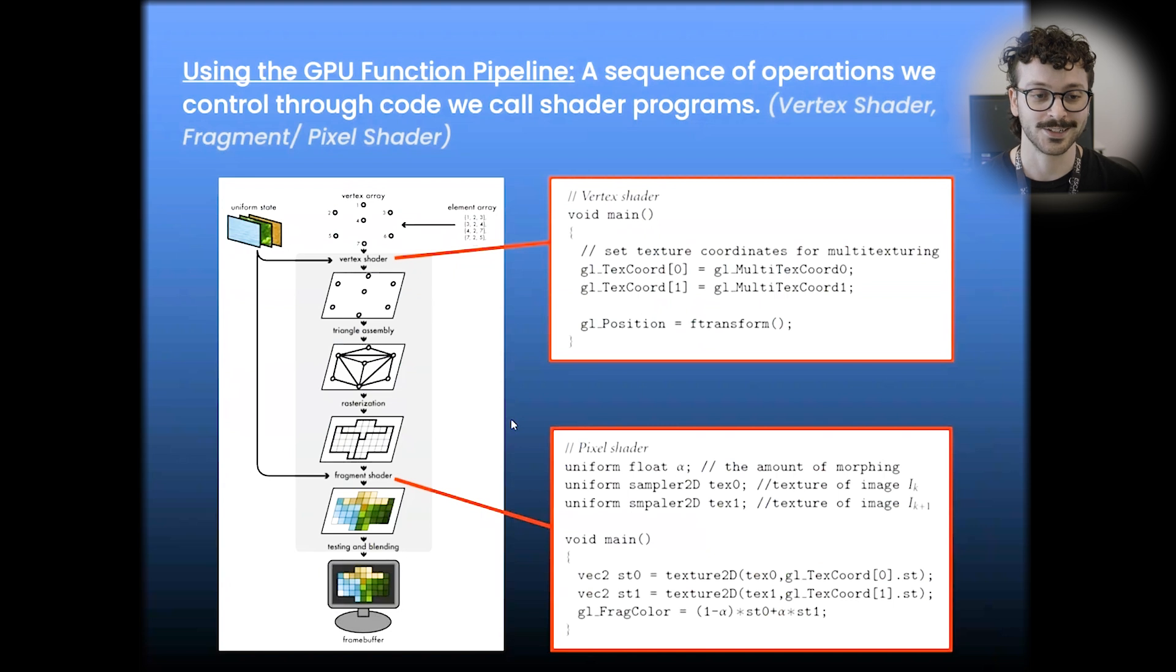So this all comes down to a process that runs on the GPU called the function pipeline, which is a sequence of operations that we control through programs called shaders. Essentially what this pipeline does is it transforms vertices, so points in space that describe position and also how they are stitched together in triangles or quads. It translates all of those points into pixels on the screen, like 2D coordinates. You can almost think of it like a mosaic. And this process has a set of functions. So at first we take the vertex array, we then transform it in the vertex shader, we then do some triangle assembly, rasterization until it then finally comes to the fragment shader and then displays within the frame buffer.